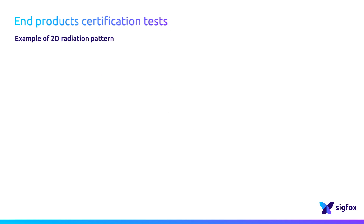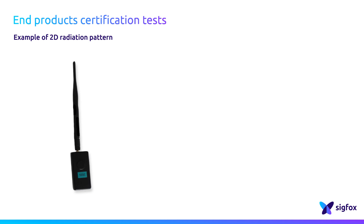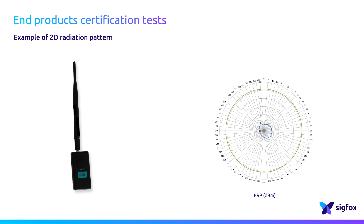As an example, this is the radiation pattern of the Key App, the first Sigfox network tester. This is the reference device used by Sigfox to assess the network. The radiation pattern shows the vertical polarization. The device is clearly omnidirectional.